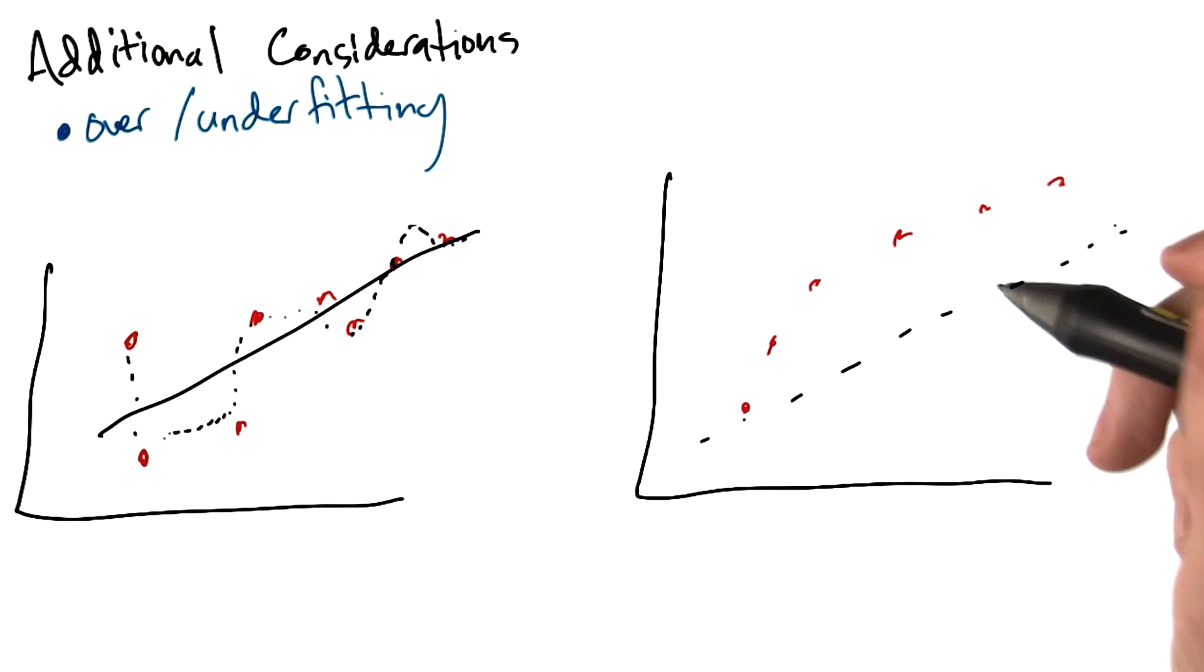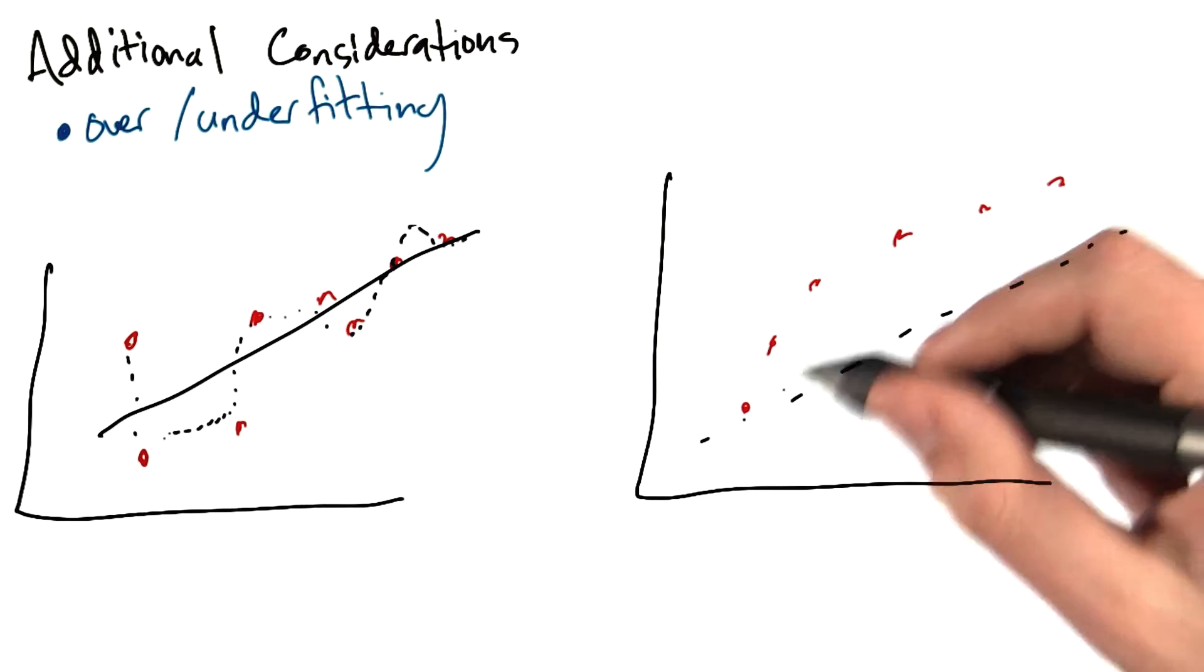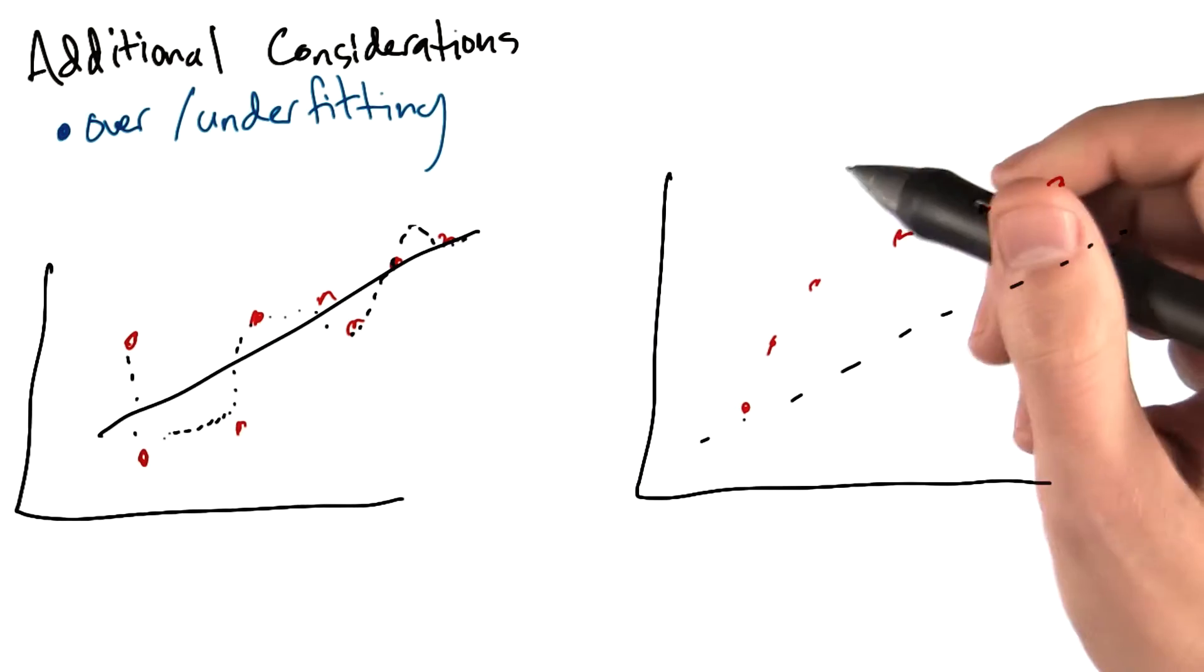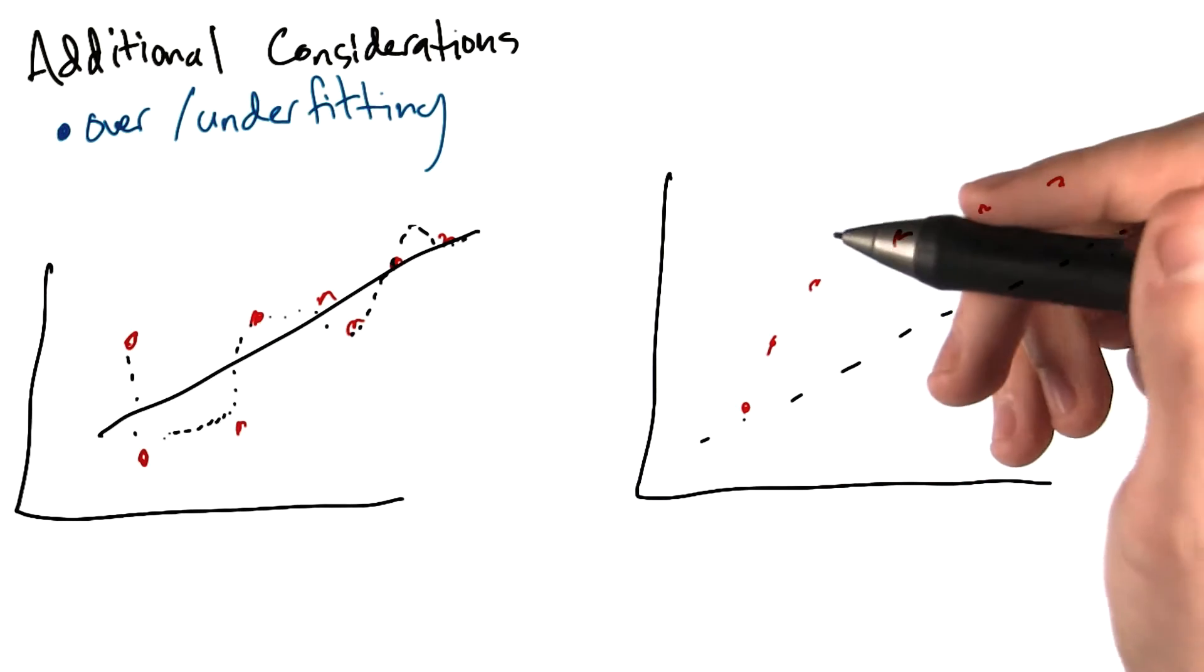We might also see underfitting, where we have data that's clearly non-linear, but we only try and fit a linear model to it. This is also a problem that you might encounter.